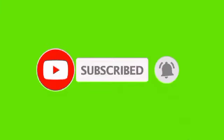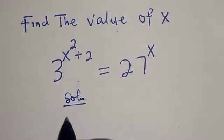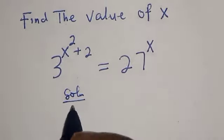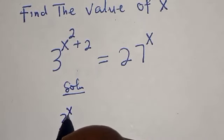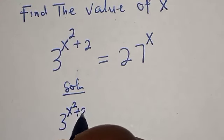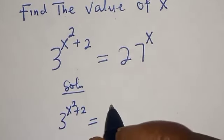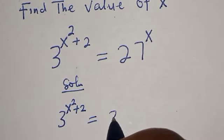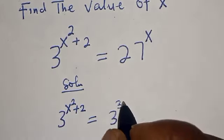Solution. We have 3 to the power of s squared plus 2 is equal to 27, which can be rewritten as 3 to the power of s squared plus 2 equals 3 to the power of 3.